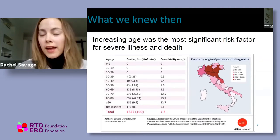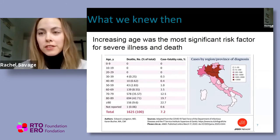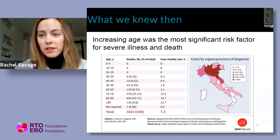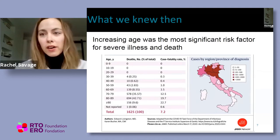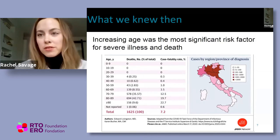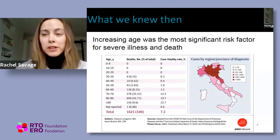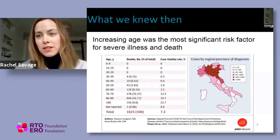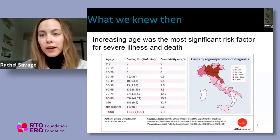There were, and still are, a number of hypotheses for why age is such an important risk factor for severe outcomes. One is that there are greater comorbidities as we age, many of which are linked to poor health outcomes for COVID-19. There's also the issue of the medications that individuals take related to these comorbidities. And then of course, as we age, so do our immune systems, and that places us at greater risk for poorer health outcomes.